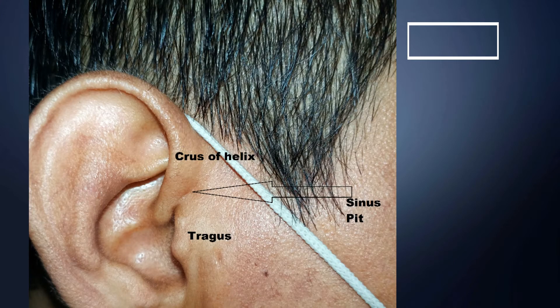The sinus pit is located anterior to the crus of the helix or above the level of the tragus. The tract is lined by squamous epithelium and lies lateral to the temporalis fascia superiorly and the parotid fascia inferiorly. It goes into the subcutaneous tissue with a branching and tortuous pattern. The terminal portion of the tract is adherent to the cartilage of the helix, and it may also extend into the parotid gland.